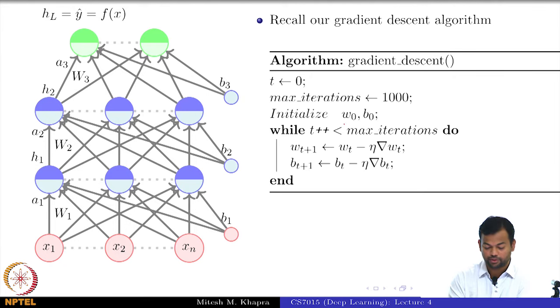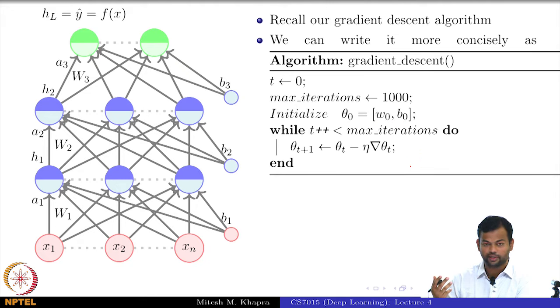I had initialized those two parameters w naught, b naught, and then I was iteratively doing this in a loop. At every step I was moving in a direction opposite to the gradient at that step. Now, can I write this a bit more compactly? We can write it using vectors.